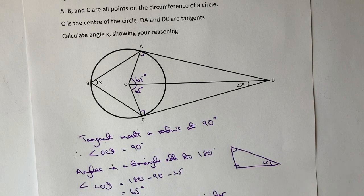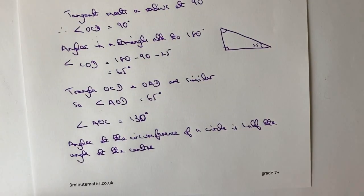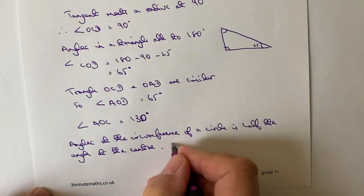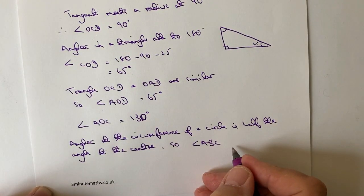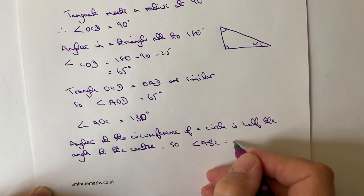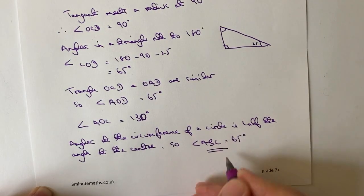Okay, so hopefully you're writing a little bit better than mine, but I can put so angle ABC, which is what they're interested in, is X is equal to 65 degrees.